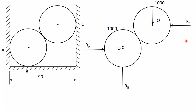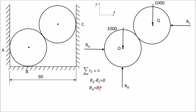Take the horizontal line as the X axis and the vertical line as the Y axis. Applying ΣFX = 0: there are two forces in the X direction — RA acting in the positive X direction and RC acting in the negative X direction. So the equation becomes RA minus RC = 0, giving RA = RC.